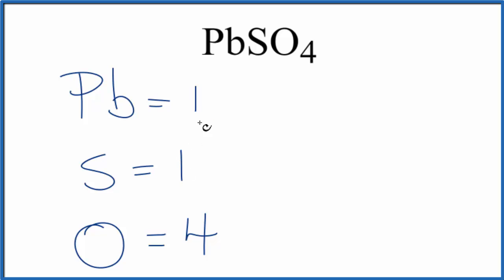If we add these all up, four plus one plus one, six total atoms in PbSO4.